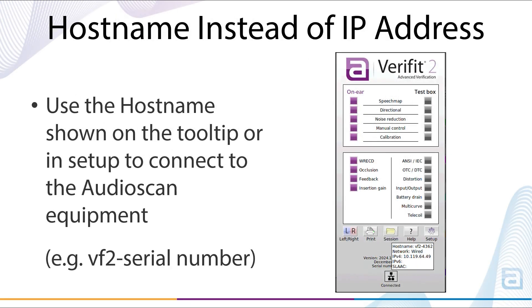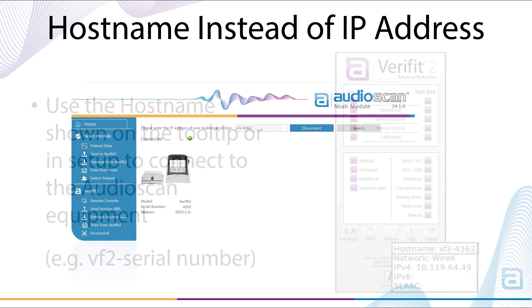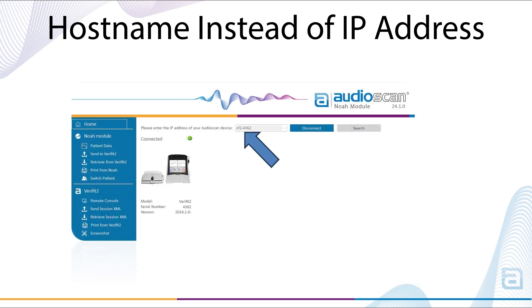Hostname is great to simplify address entry. Using hostname is especially helpful when the IP address changes because the network is not configured to provide a fixed IP address to the Verifit 2 or Axiom. Using hostname will result in a connection even if the IP address changes to another address on the network. This function is also helpful to avoid entering the several characters in an IPv6 address.